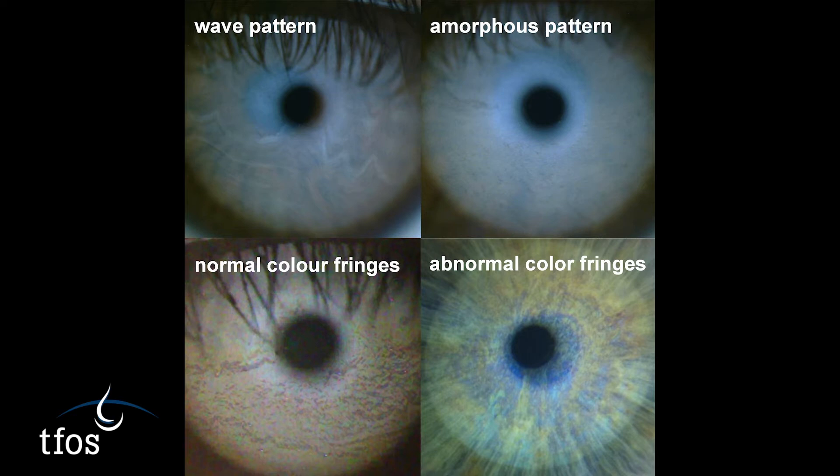First-order coloured fringes are visible when the lipid layer is approximately 100 nm thick. Meibomian gland dysfunction can adversely affect lipid quality and quantity and result in abnormal coloured fringe patterns with rapidly changing bright colours. This is thought to signify clumps of lipid floating amidst little or no lipid cover.